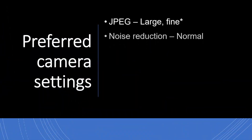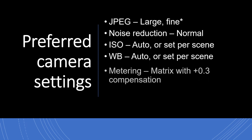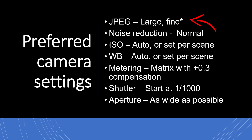These are my preferred camera settings. First, we're going to set our cameras for JPEG, large, fine. Why? Because we're going to use in-camera noise reduction, which works with JPEG. You can't get that with raw files — you have to do it later on. So we're going to use the camera's noise reduction to do the work for us. I set it for normal.